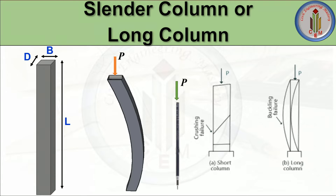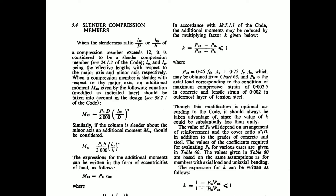So long columns tend to buckle and short columns tend to crush when the load is applied. Crushing failure occurs in short columns and buckling failure occurs in long columns. Now, as per IS 456, clause 3.4 on slender compression members: when the slenderness ratio LEX/D or LEY/D of a compression member exceeds 12, it is considered to be a slender compression member.